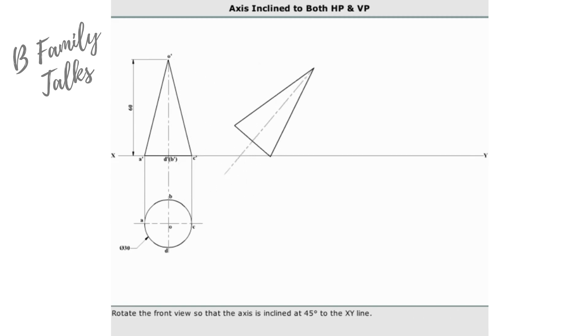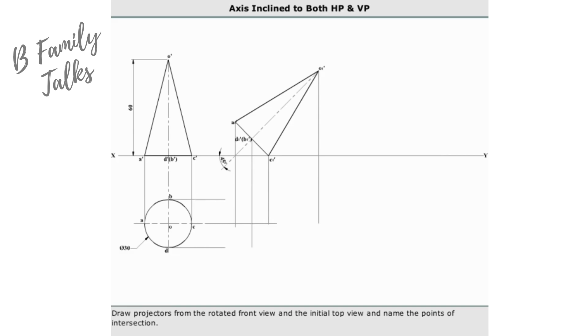Rotate the front view so that the axis is inclined at 45 degrees to the XY line. Draw projectors from the rotated front view and the initial top view and name the points of intersection. Join the intersection points correspondingly to get the top view.